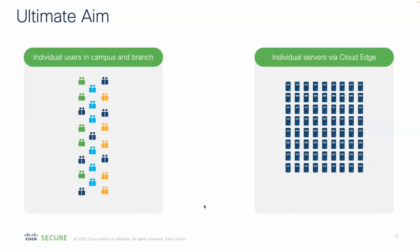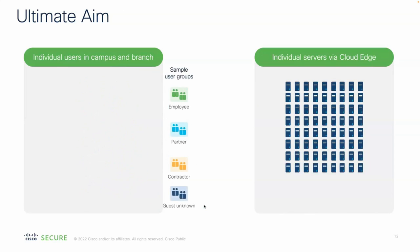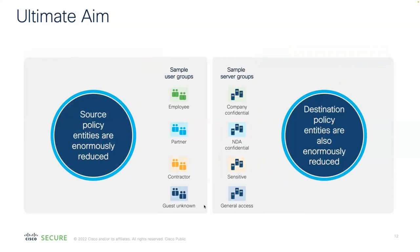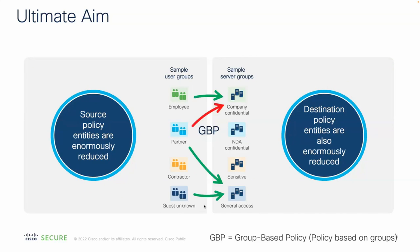The ultimate aim: if you have a number of users — or IoT devices — you put them into a small number of simple groups to reduce your policy. On the destination side you may have servers or services, and again the idea is to reduce them down into a small number of groups. Then you have your policy between these groups — permit or deny with your group-based policies — and this is how we simplify our security policy in the network.